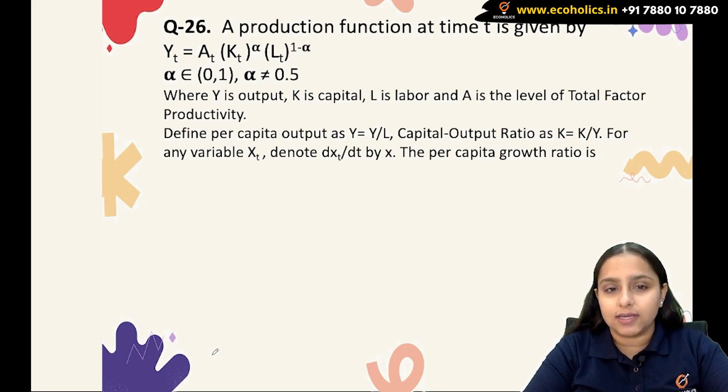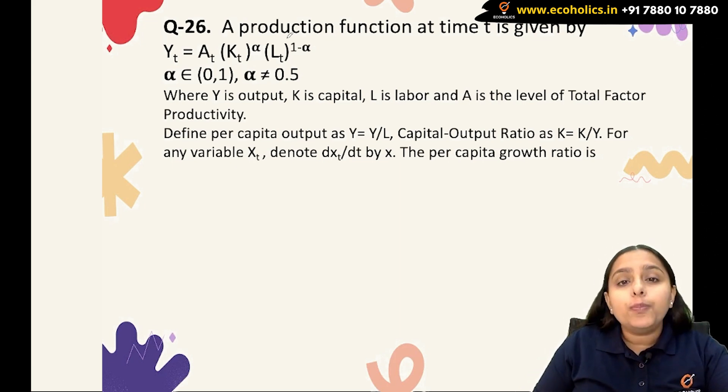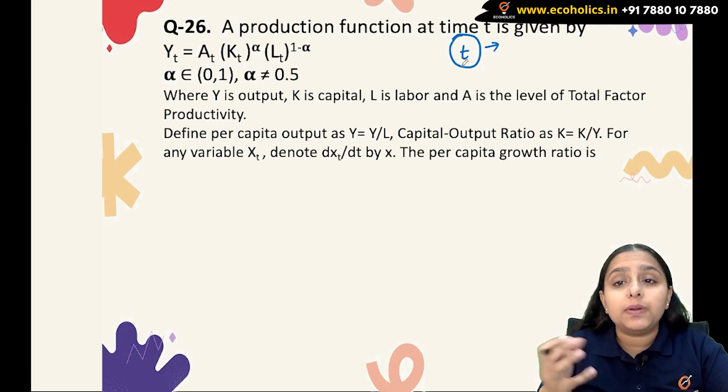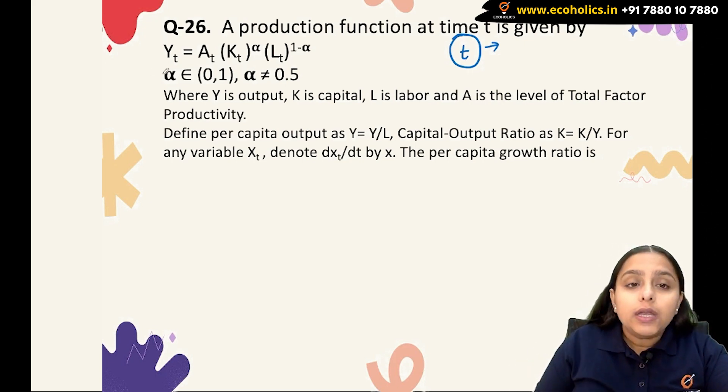In this video, we will discuss the solution for question number 26. A production function at time t is given by Y_t = A_t(K_t)^α(L_t)^(1-α). The subscript t shows the time period at which this variable is being measured. α is between 0 and 1, but α is not equal to 0.5.